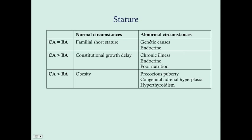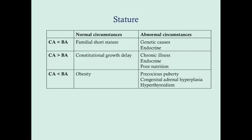Under abnormal circumstances, you can still have a chronologic age equal to bone age, and in that case there can be genetic or endocrine causes — so you can't rule out abnormal circumstances just because they're equal. If the chronologic age is greater than the bone age, the bones haven't developed as quickly as expected. Normally, this is constitutional growth delay — a late bloomer — which is perfectly normal. But abnormally, this can be due to chronic illness, endocrine causes, or poor nutrition.